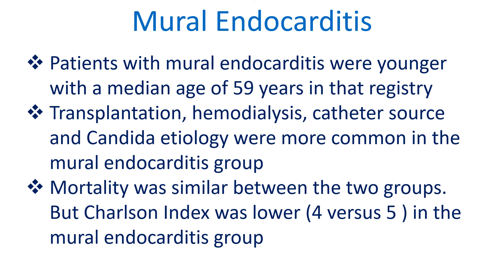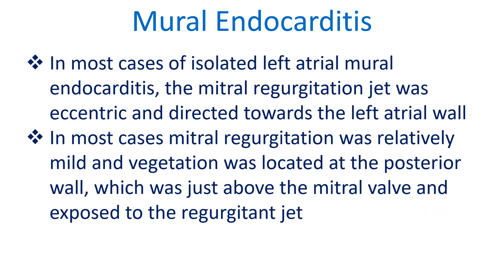Mortality was similar between the two groups, but the Charlson index was lower — 4 versus 5 — in the mural endocarditis group. In most cases of isolated left atrial mural endocarditis, the mitral regurgitation jet was eccentric and directed towards the left atrial wall.